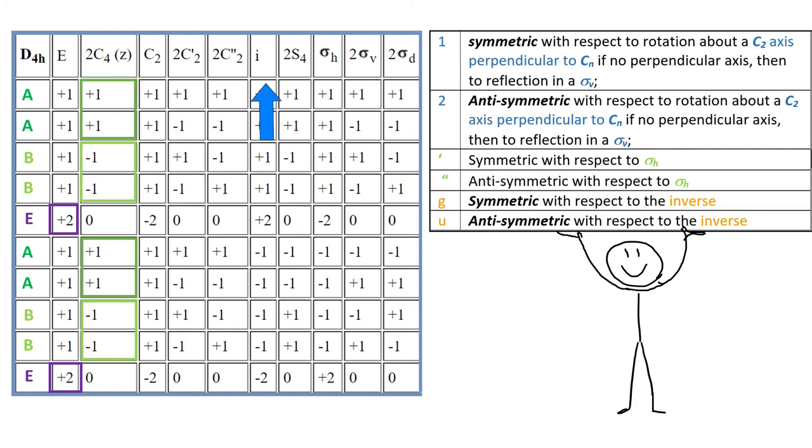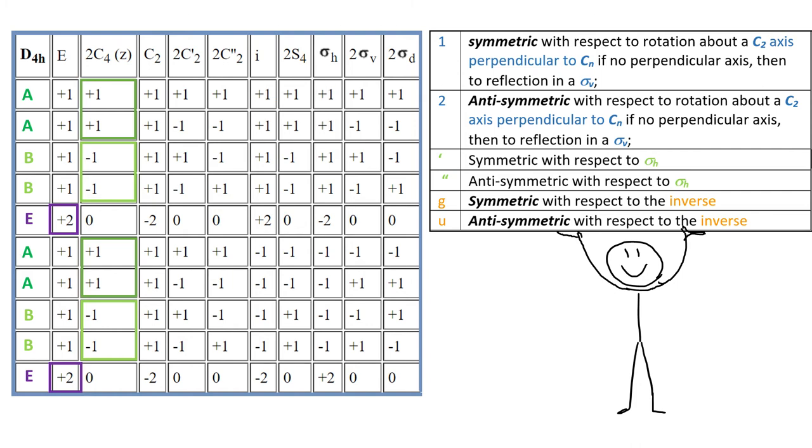Now, the group has both inversion and reflection in a sigma horizontal. In cases like that, the inversion overrides the reflection. So we will have G and U labels. First five representations are symmetric under the inversion, which gives G subscript. And the last five representations have subscript U, because they are anti-symmetric with respect to the inversion.